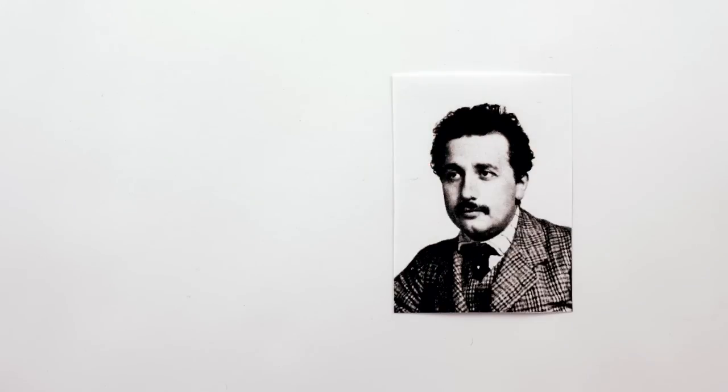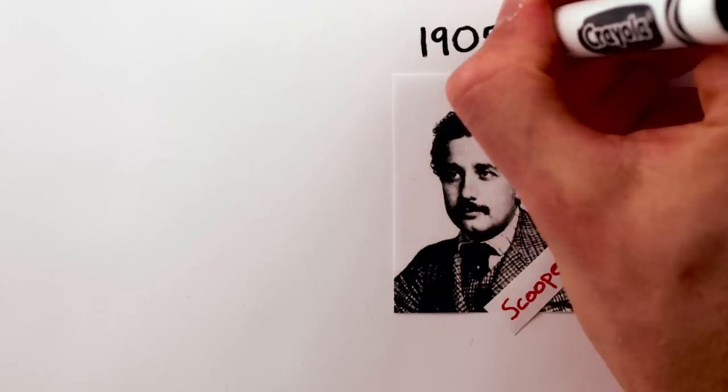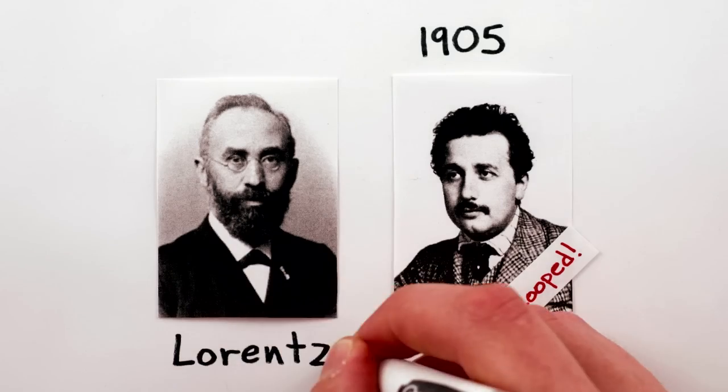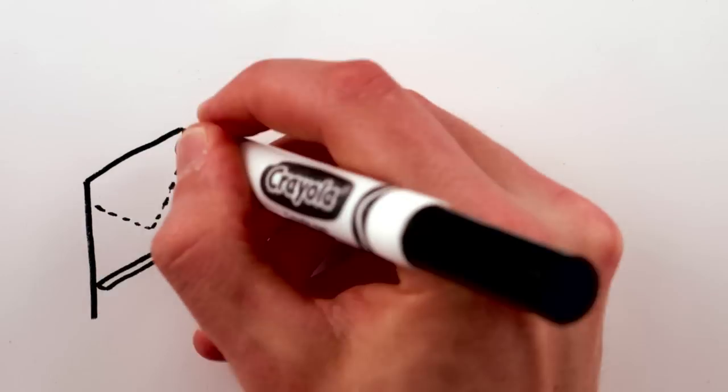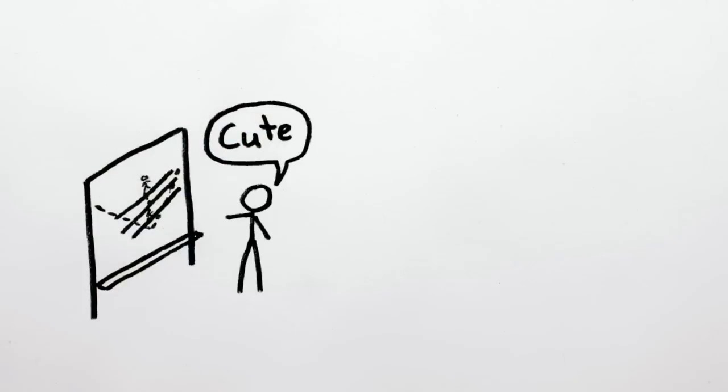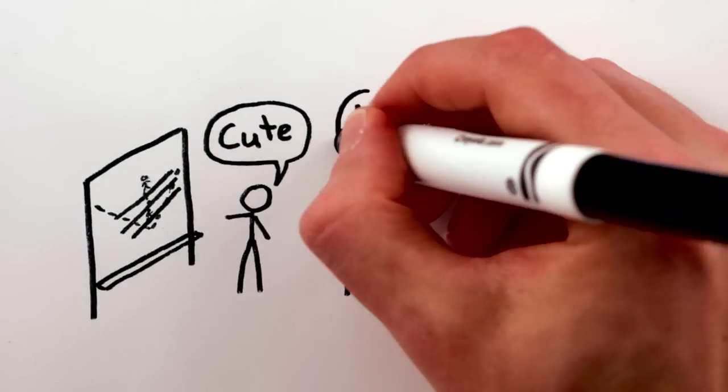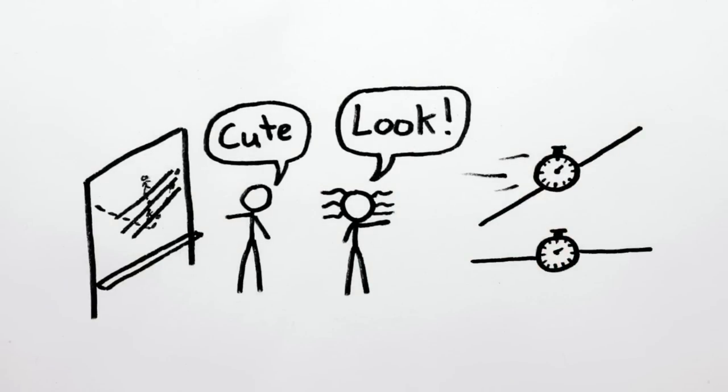Of course, Einstein didn't figure out this special principle of relativity in 1905. It was already done by a guy named Lorentz 10 years earlier. But Lorentz just thought that this time rotation was a mathematical trick, and it took Einstein to step in and, you guessed it, proposed that time rotation is real,